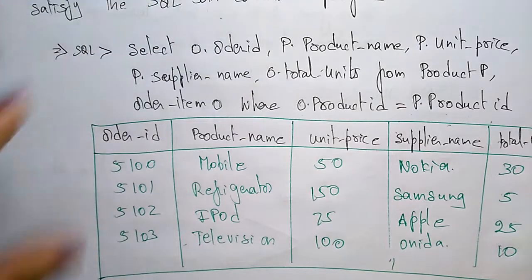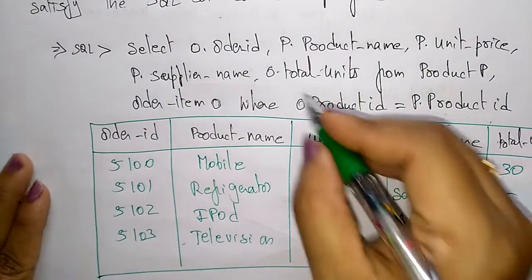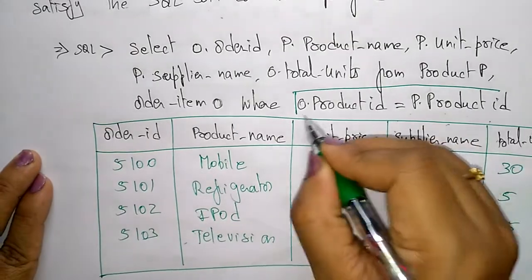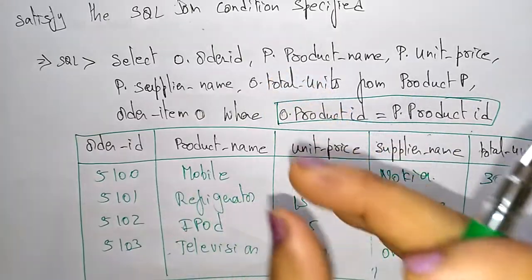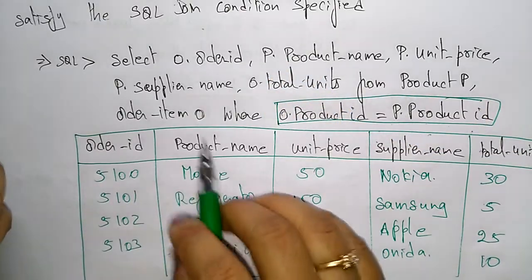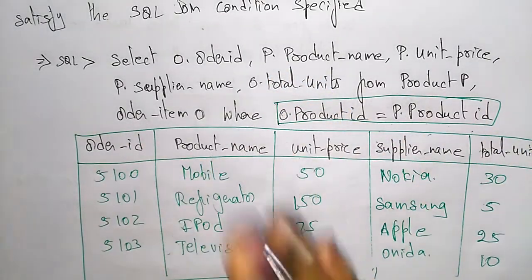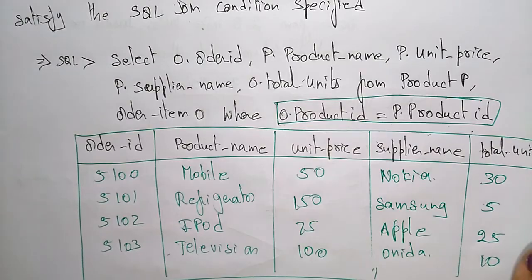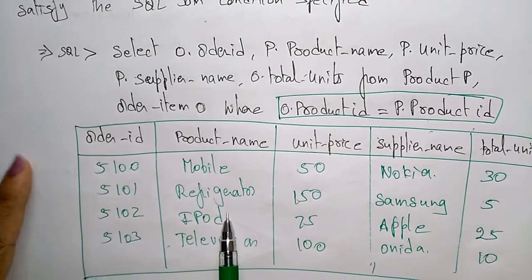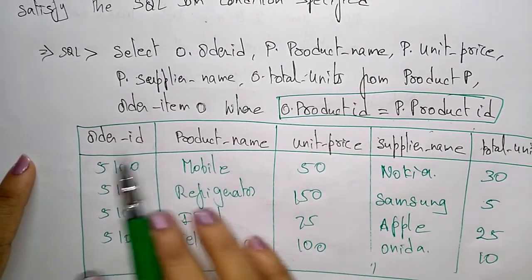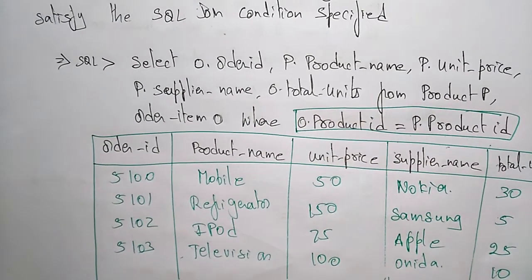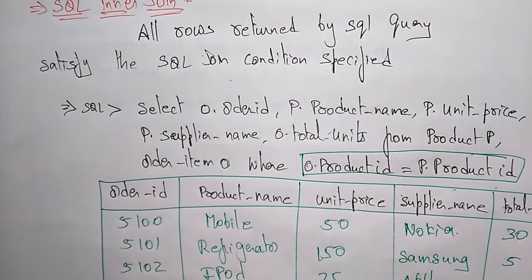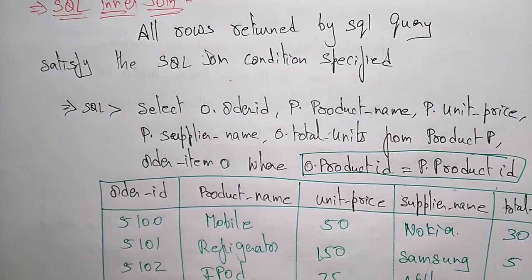So this is how to combine two tables using equi join. Based on the condition satisfied, we are selecting the fields from two tables — this is the relation between the two tables. All rows returned by the SQL query satisfy the SQL join condition specified. This is SQL inner join. In the next video I will explain about SQL outer join. Thank you.